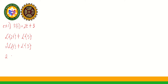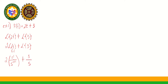The Laplace transform of T raised to 1: N is equal to 1. So we have 2 times 1 factorial over S raised to 1+1, plus the Laplace of 3. For the Laplace of a constant, whatever the value of the constant is, that goes over S — so the Laplace of 3 is 3 over S.